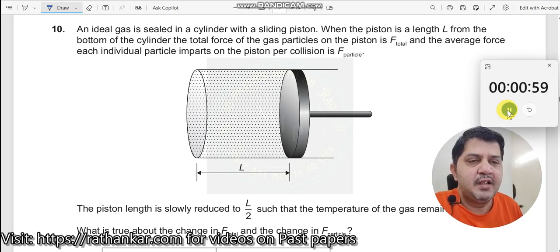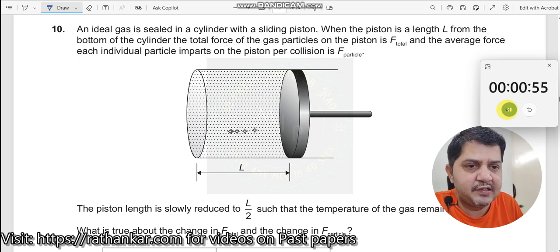Question number 10. An ideal gas is sealed in a cylinder with a sliding piston. This piston is able to slide. The initial length is L. The piston is at length L from the bottom of the cylinder.